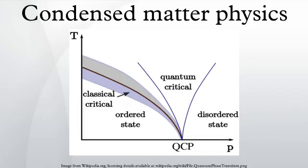The structure of crystalline solids was studied by Max von Laue and Paul Knipping, when they observed the X-ray diffraction pattern of crystals, and concluded that crystals get their structure from periodic lattices of atoms. The mathematics of crystal structures developed by Auguste Bravais, Yevgraf Fyodorov and others was used to classify crystals by their symmetry group, and tables of crystal structures were the basis for the series International Tables of Crystallography, first published in 1935.